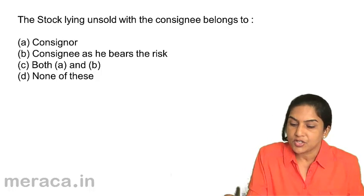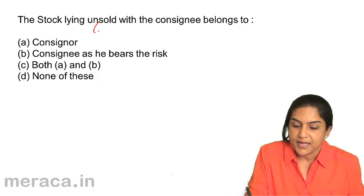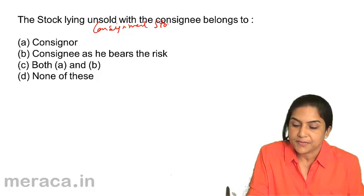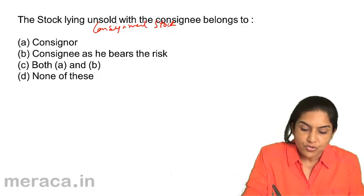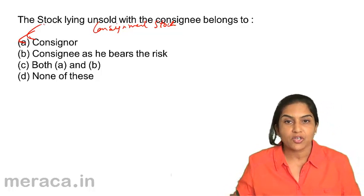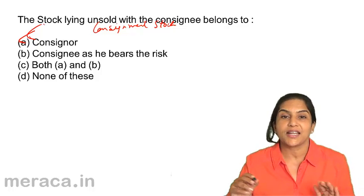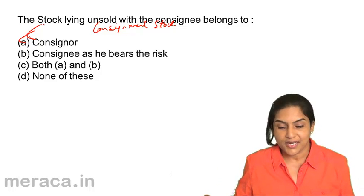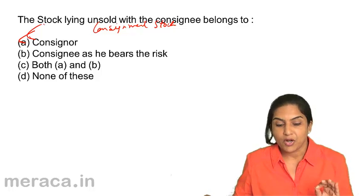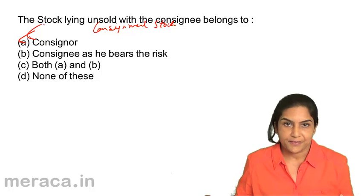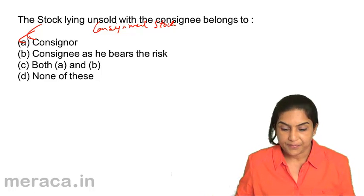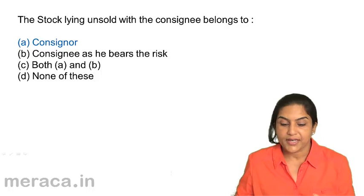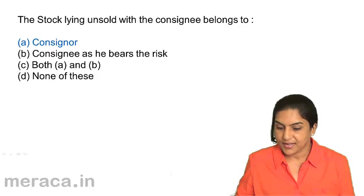The stock lying unsold with the consignee is also referred to as consignment stock or stock on consignment. It belongs to the consigner. The goods physically lie in the godown of the consignee, but the unsold stock belongs to the consigner — the property is not transferred, only goods are sent physically. So the correct answer is A: Consigner.